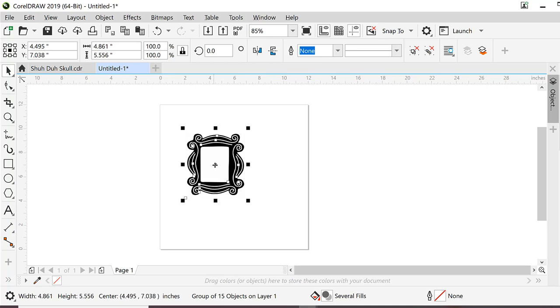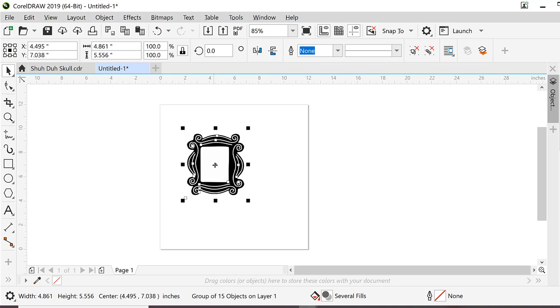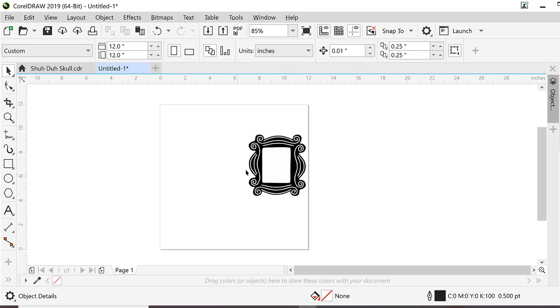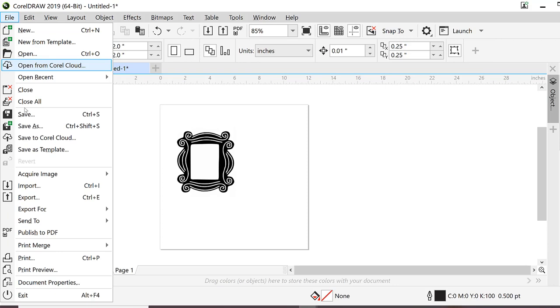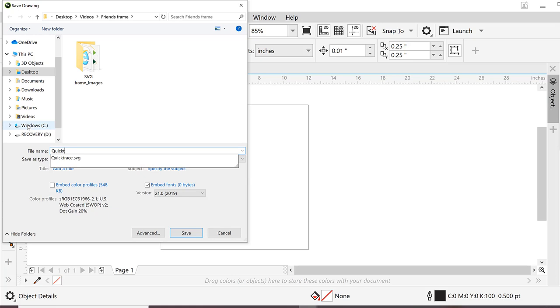I use CorelDRAW just because it's a fairly intuitive and easy to use program. The trace feature is literally one button called quick trace. That being said, CorelDRAW is a program that I had to pay for. The same function can be found in Inkscape, which is free to use.